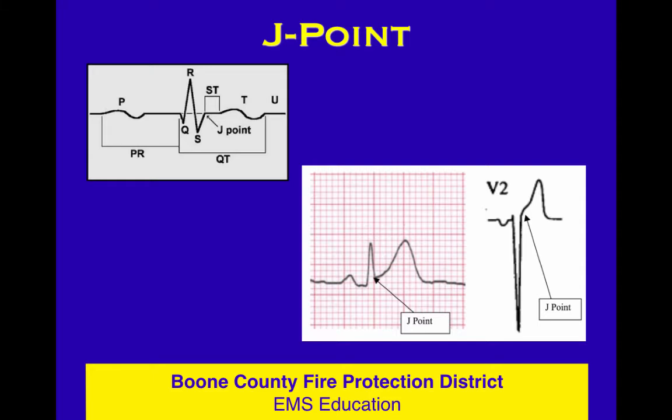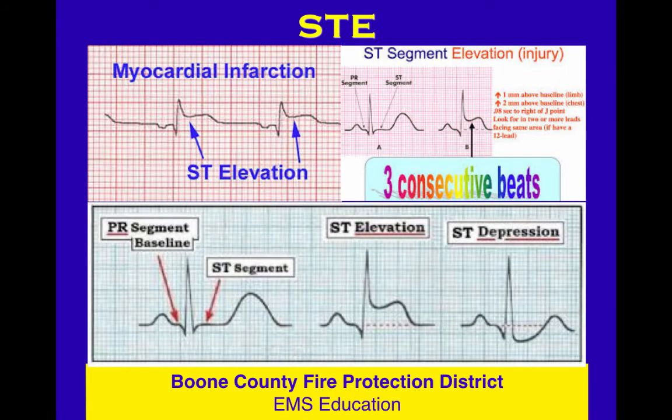Key point: what's the J point? Because we're looking for ST segment elevation or depression, we need to know where the ST segment starts — it starts at the J point. It's where the QRS is over, where the QRS has come back to the isoelectric line, the baseline. The J point is the start of the ST segment, and it moves up into the T wave. If we're going to talk about ST changes, we've got to figure out where the ST starts.